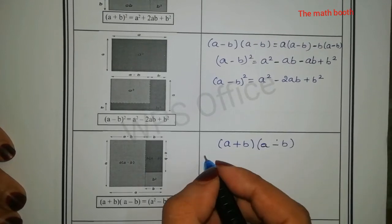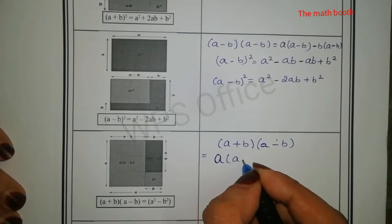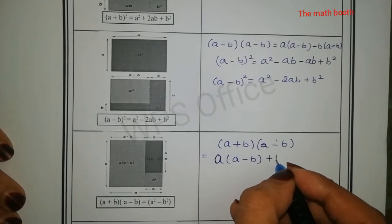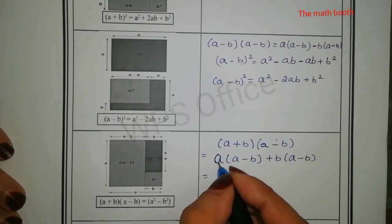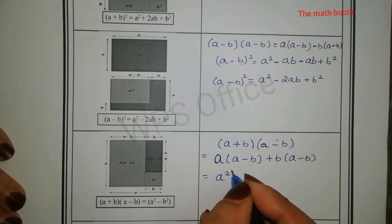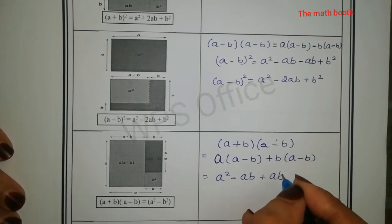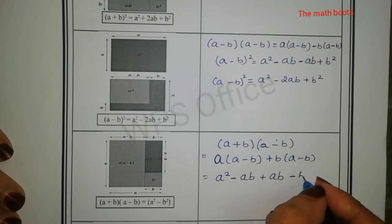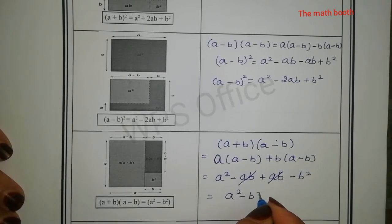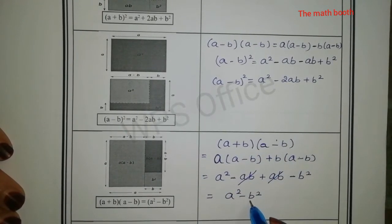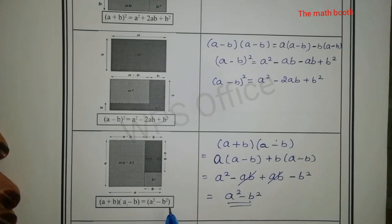Let us split the bracket: a outside and (a - b), plus b outside and (a - b), second bracket kept as it is. So a into a gives a², a into b gives ab; plus b into a gives ab, and b into b gives b². So plus ab minus ab get cancelled, and what we get is a² - b². So (a + b)(a - b) is nothing but a² - b², according to the formula.